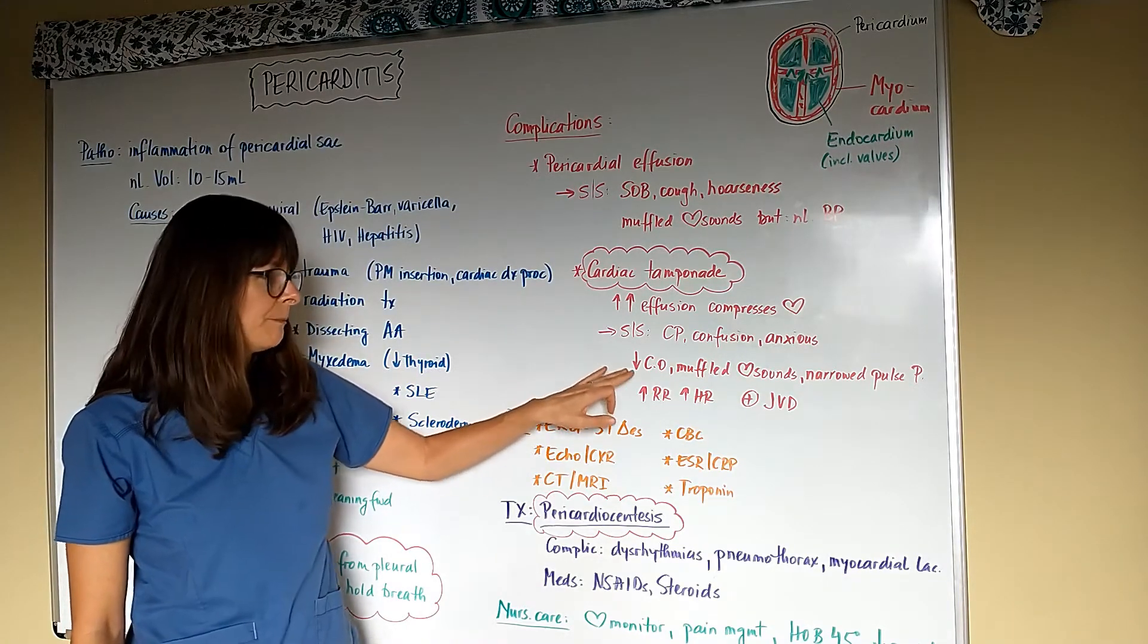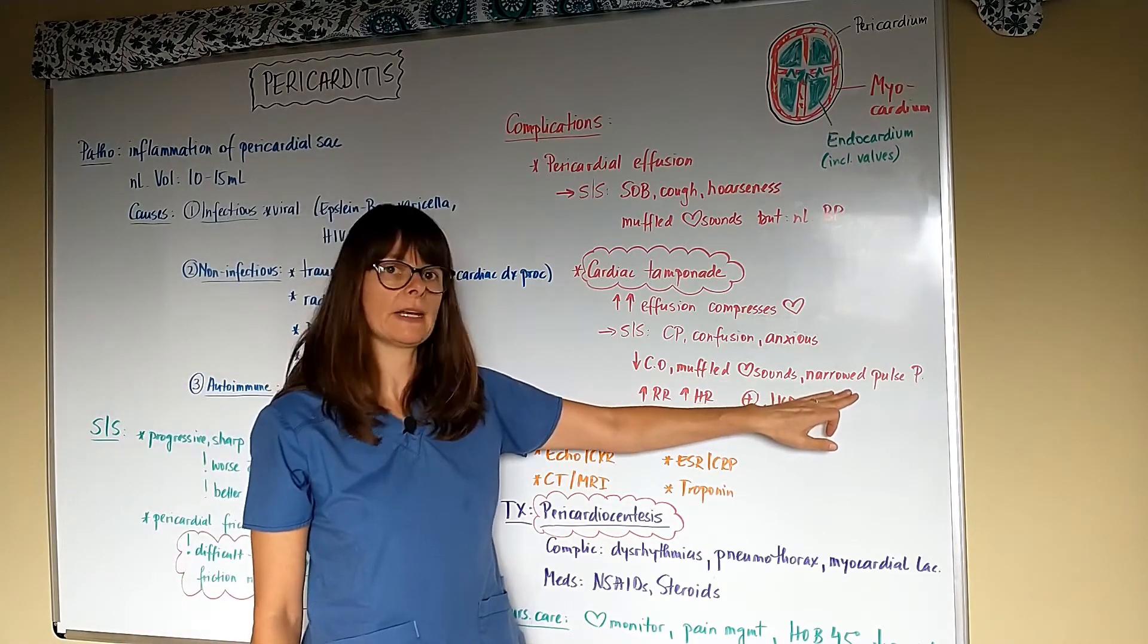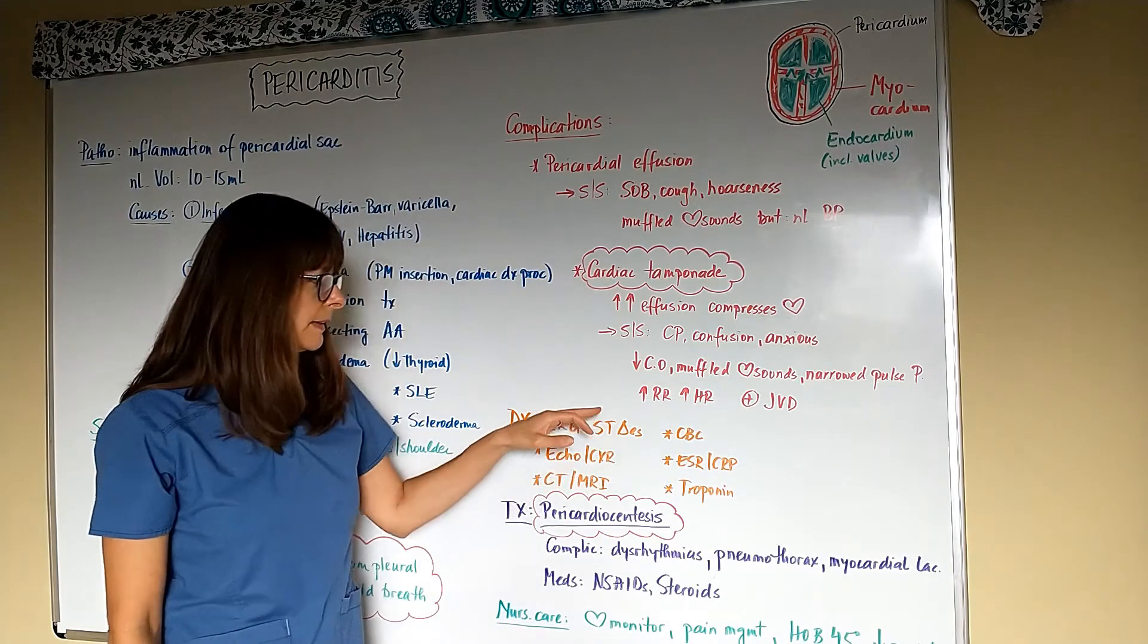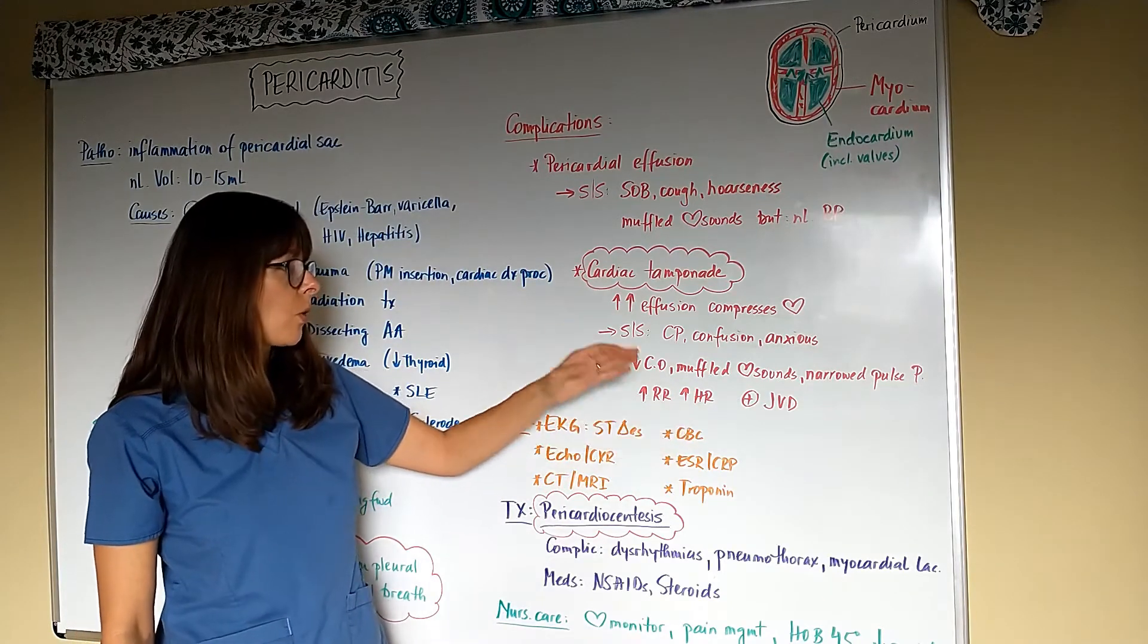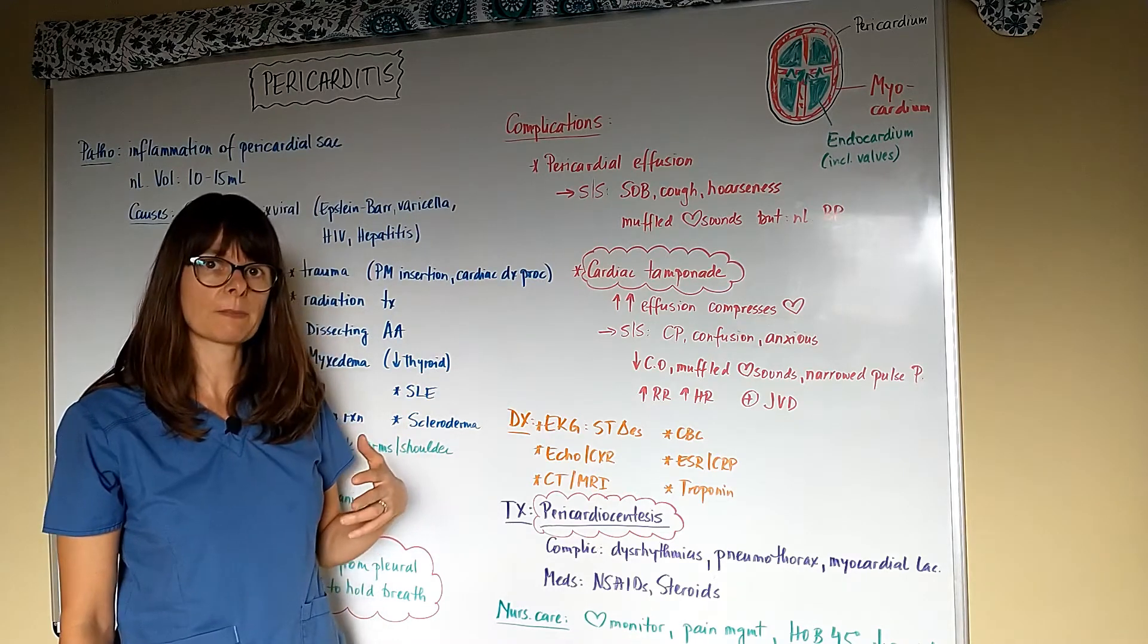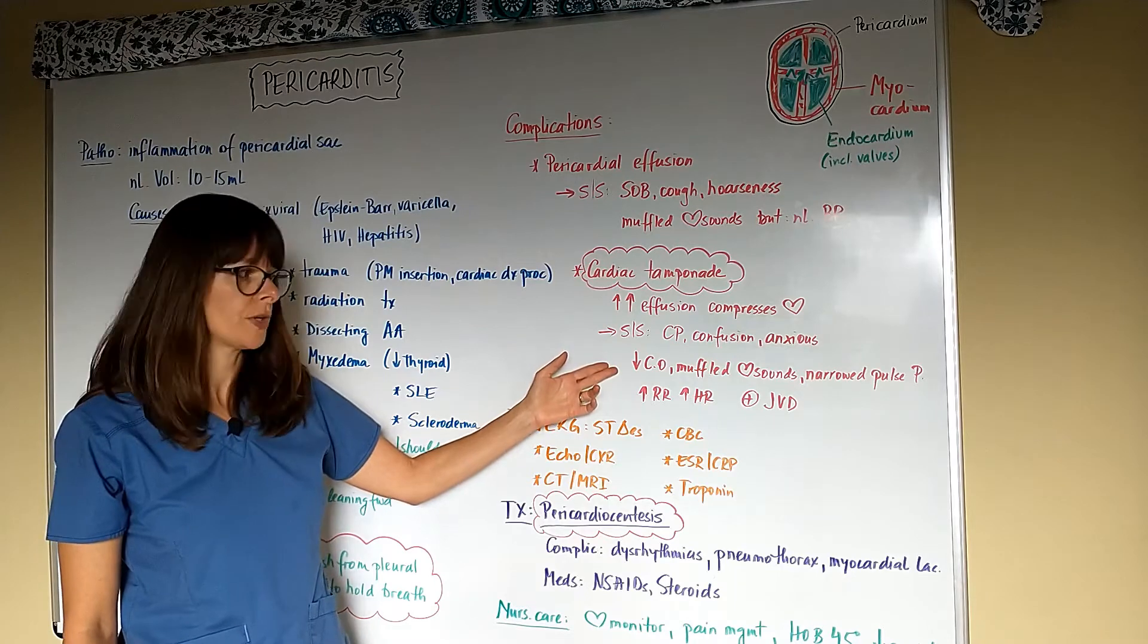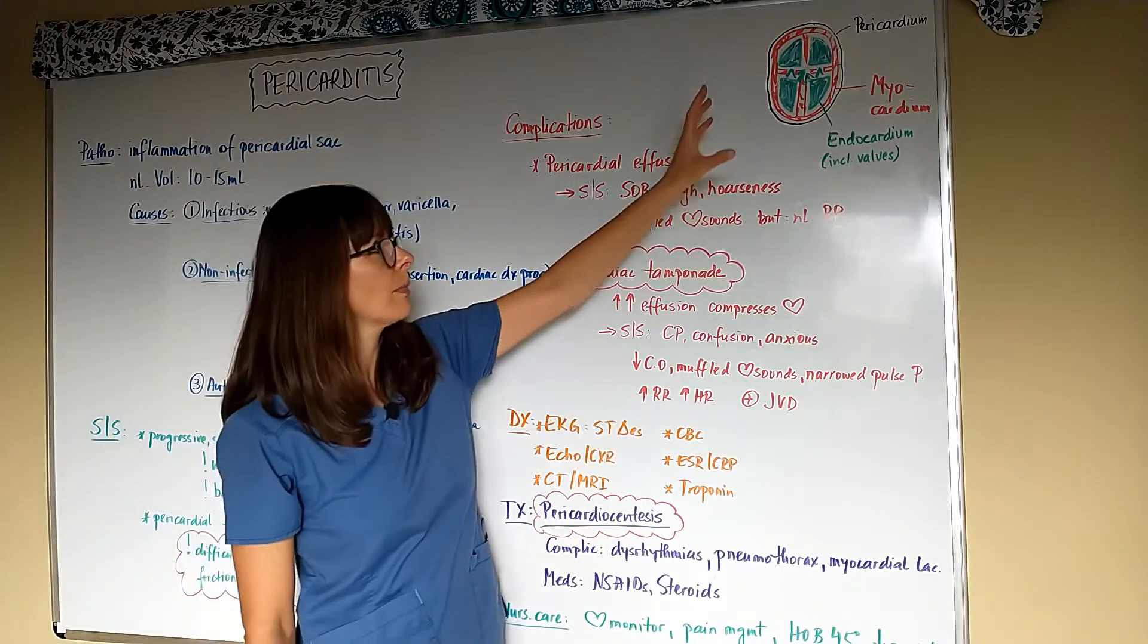They will have signs and symptoms of decreased cardiac output, so their blood pressure will drop. We will still have those muffled heart sounds, and the patient will have a narrowed pulse pressure. Their respiratory rate and heart rate will go up because now the body is trying to compensate by activating the sympathetic nervous system for the low cardiac output and low perfusion.